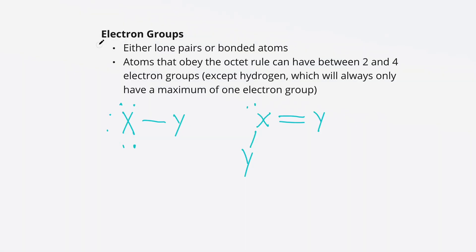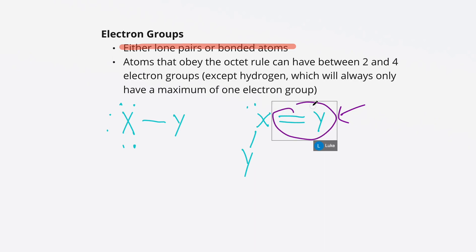First we need to establish what electron groups are. Electron groups are either lone pairs or bonded atoms. Looking at the figure to the right, there's a double-bonded element attached to x — x and y are just placeholders for whatever elements you're working with. Even though there's a double bond, that is still just considered one bonded atom, so that entire double-bonded y is just one electron group.